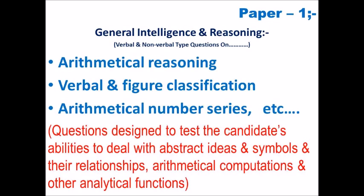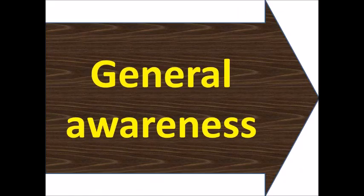This is the objective type question paper. It will also contain Arithmetical Reasoning, Verbal and Figure Classification, Arithmetical Number Series, etc. These topics are covered in General Intelligence and Reasoning — questions designed to test the candidate's abilities to deal with abstract ideas, symbols and their relationships, Arithmetical Computations, and other analytical functions.